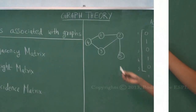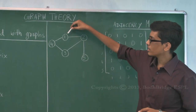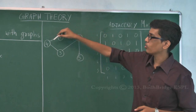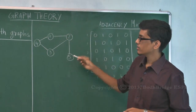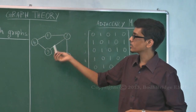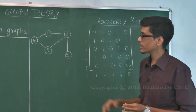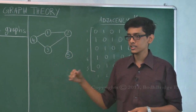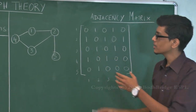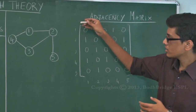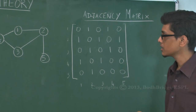In this example graph we have vertex 1 connected to 2 and 4, vertex 2 connected to 3 and 5, and vertex 3 connected to 2 and 4, and so on. So how can this be represented as a matrix?